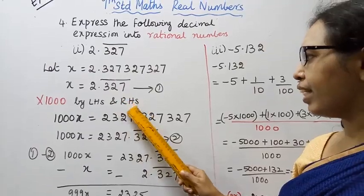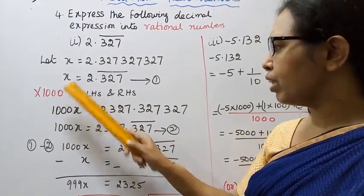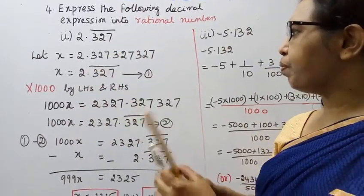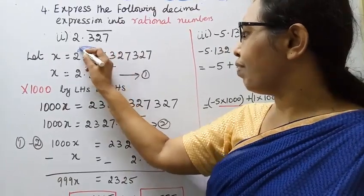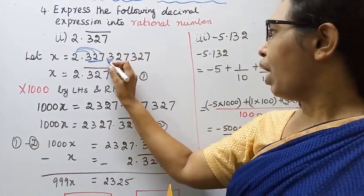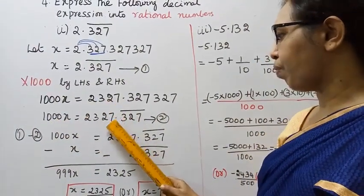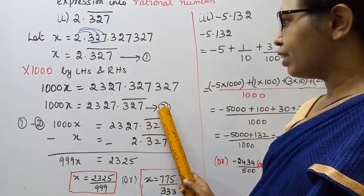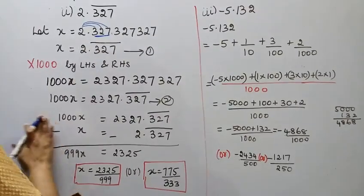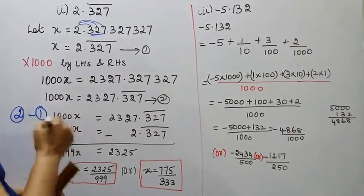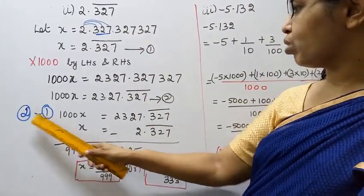1000 on the left hand side and right hand side. LHS and RHS, left hand side and right hand side multiply by 1000. This multiply is 1000 into x, 1000x. 1000 on the right hand side, the point is 327.327̄. 1000x equals 2327.327 bar. This is equation 2.